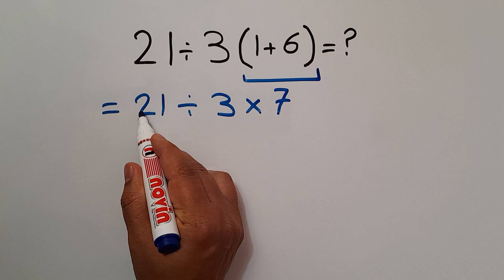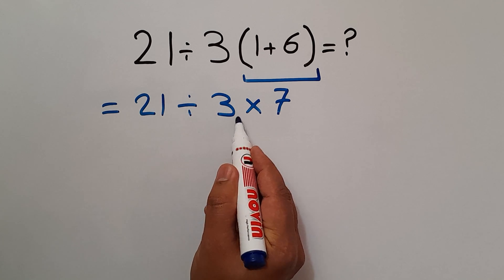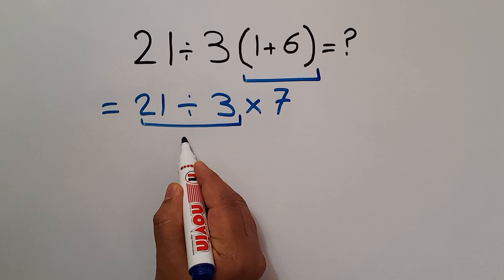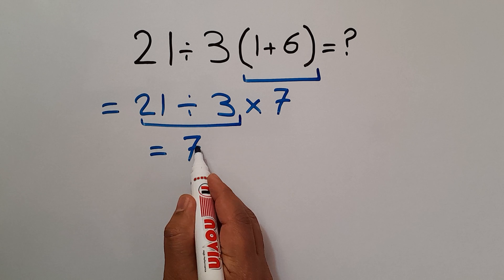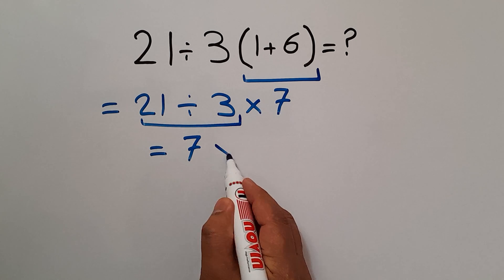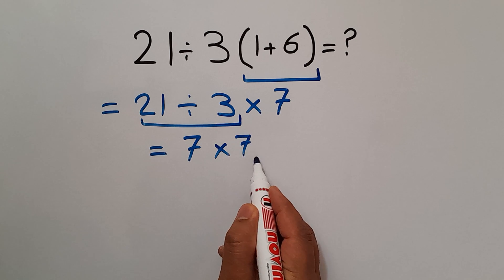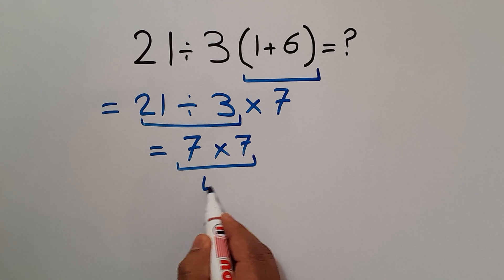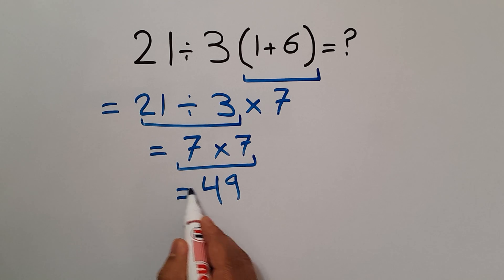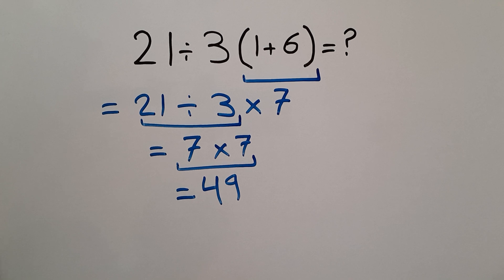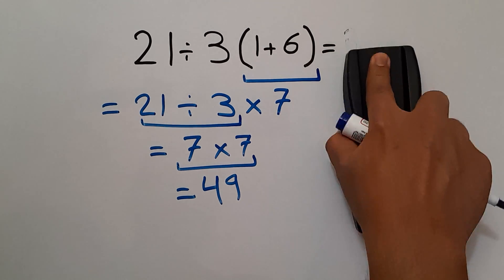So first, this division: 21 divided by 3, which equals 7. So, 7 times 7. And 7 times 7 gives us 49. So our final answer to this problem is 49.